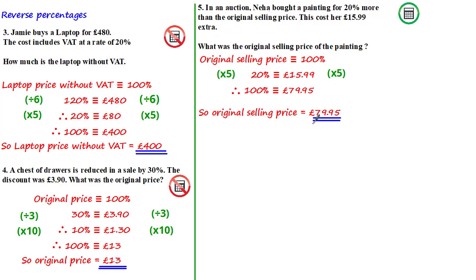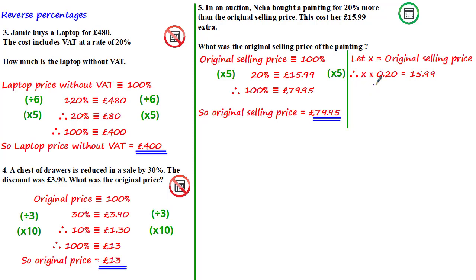We could also solve this using multipliers. From the question, 20% of the original selling price equals £15.99. If we let x equal the original selling price, then x times by 0.20 — the multiplier used to take 20% of the original price — equals £15.99. Dividing both sides by 0.20 gives x equal to £79.95.